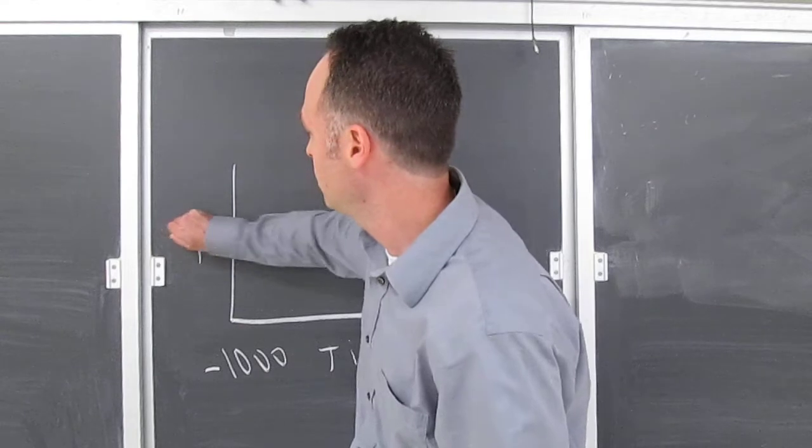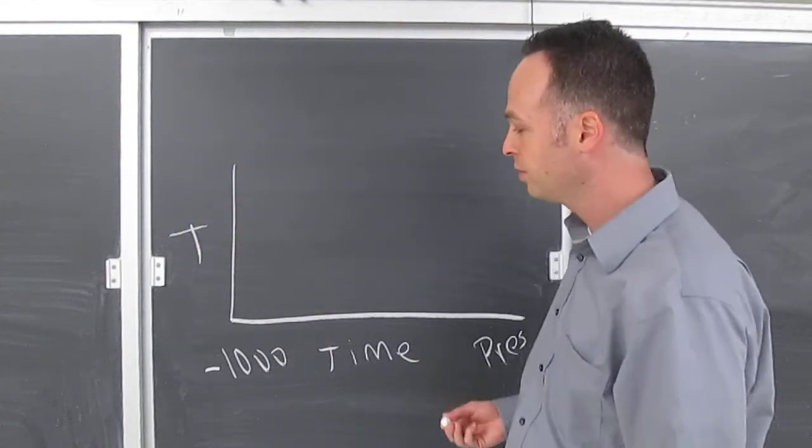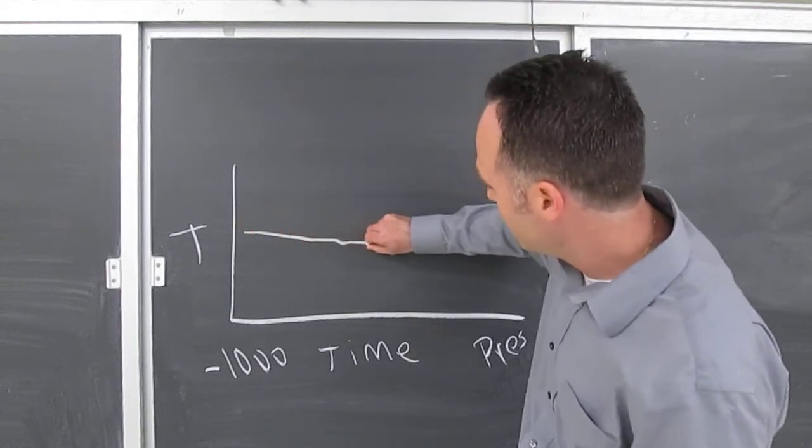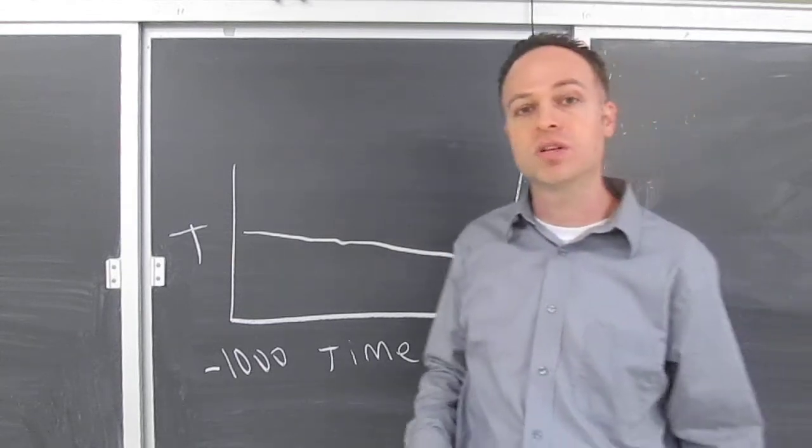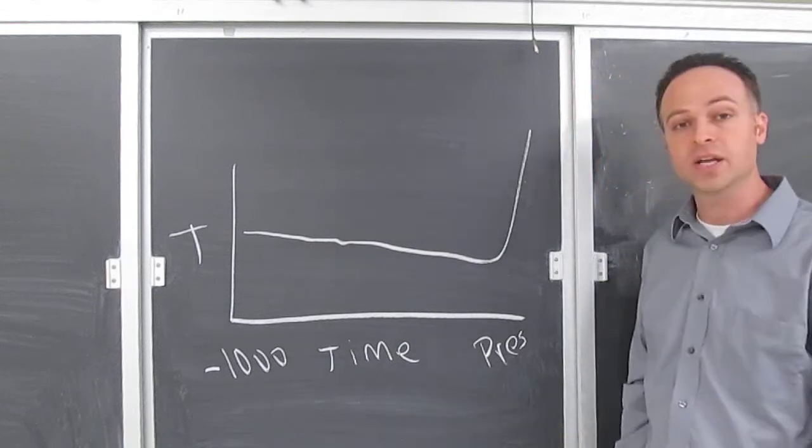And let's assume this is going to be temperature. So Michael Mann's hockey stick curve looks something like this, in that you have temperature looks like it's maybe going down a little bit, and then all of a sudden, right at the end, it shoots upwards. You can see why it's called the hockey stick graph, because it looks just like a hockey stick.